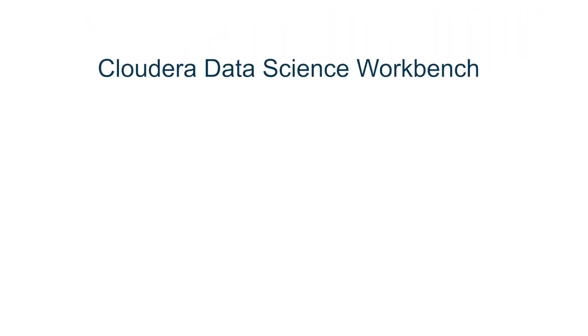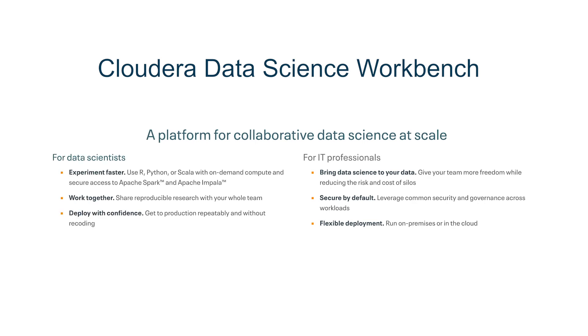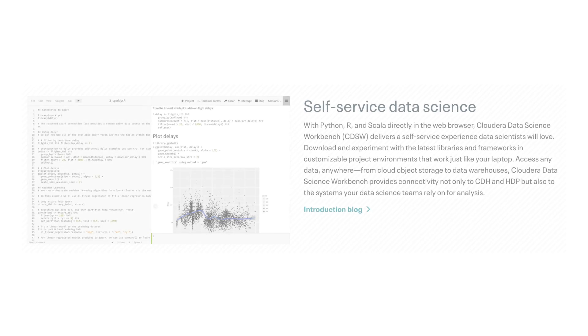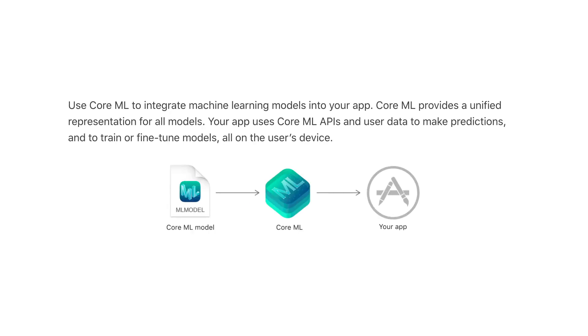At number 9, Cloudera. The Cloudera Data Science Workbench, although technically not open source, allows data scientists to use R, Python, or Scala with on-demand compute and secure access to Apache Spark and Apache Impala. With it, users develop and prototype new machine learning projects and easily deploy them to production.